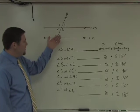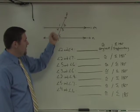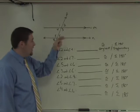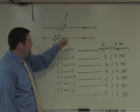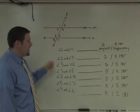On the board right now, I have a set of parallel lines, M and N, that are cut by a transversal, P. We know they're parallel by the arrows that are right here. We've labeled the angles 1 through 8 as seen on the diagram.